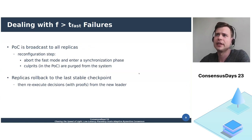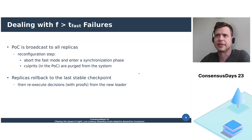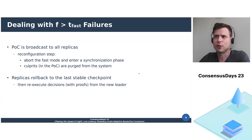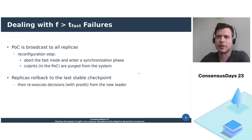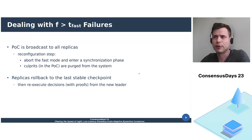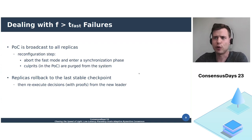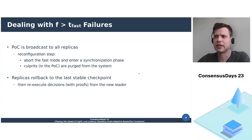For detecting faults, it is necessary to periodically check the state of replicas to ensure they are still consistent. If we find a proof of culpability, the system needs to be reconfigured. This happens by first aborting the fast mode, after which the system enters a synchronization phase. Second, the culprits identified by the proof of culpability — proved by conflicting signed messages — are purged from the system, which will be initiated by the new leader. Third, replicas will perform a rollback to the last stable checkpoint and re-execute a consistent log of decisions received from the new leader.